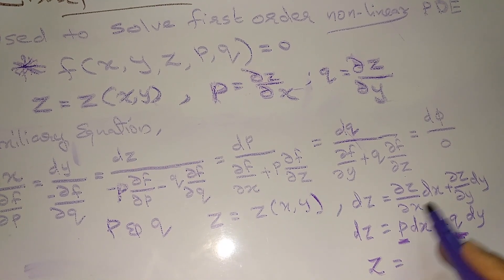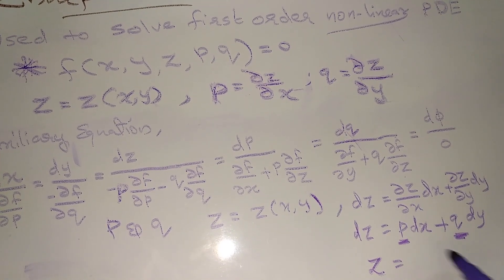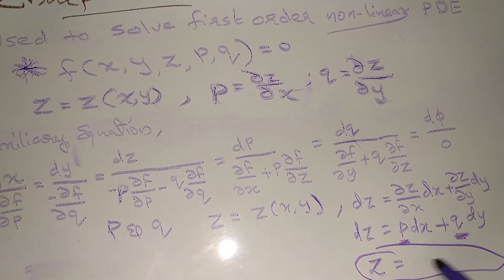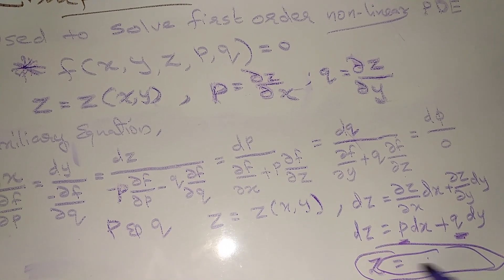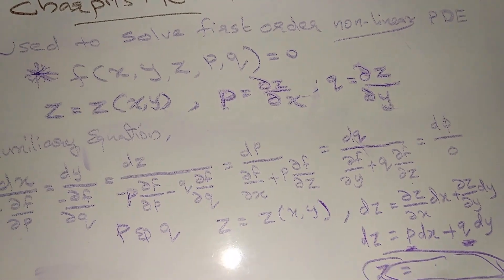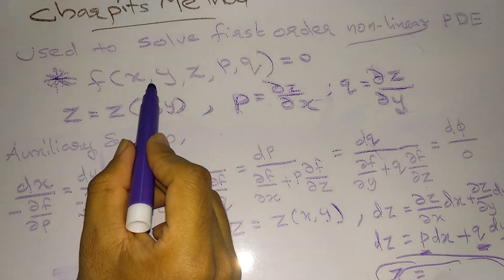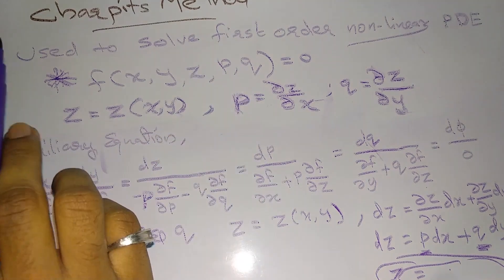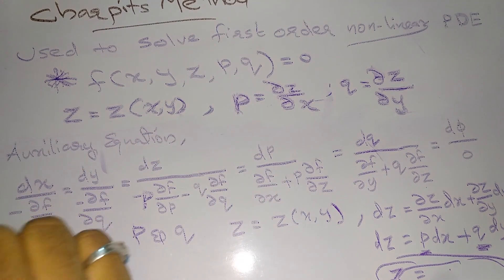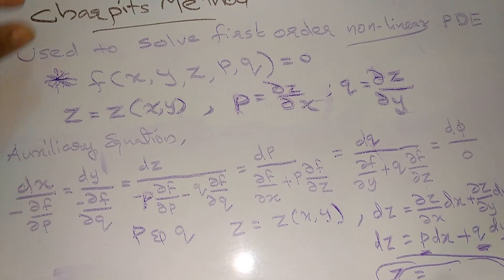Replace p and q, then integrate both sides to get z as a function of x and y — that is, the solution of the partial differential equation f(x, y, z, p, q) = 0. This is Charpit's method.